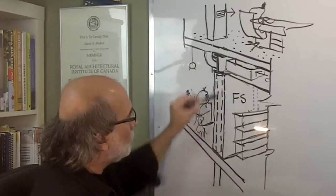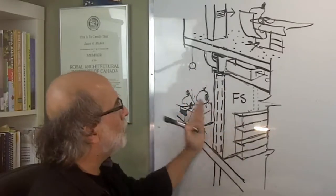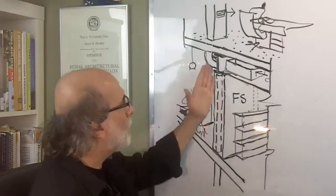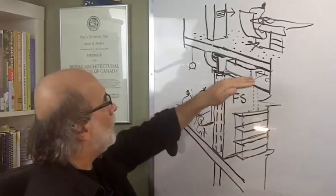Now, the assembly that separates between the different zones or different compartments, the demising wall here for example, and this is a floor.